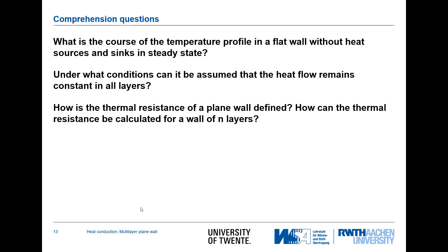This is the end of the video on multi-layer plane walls without heat sources under steady state conditions. A few review questions: First, what is the temperature profile in a flat wall without heat sources in steady state? As covered in the previous lecture, the temperature profile is a straight line. Second, under which conditions can the heat flow be assumed constant in all layers? This assumption holds under steady state conditions — no changes in temperature — and with no heat sources or heat sinks that would alter the heat flux as it travels through the wall.